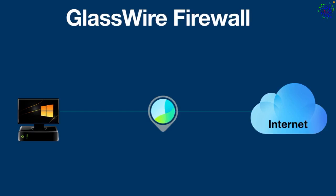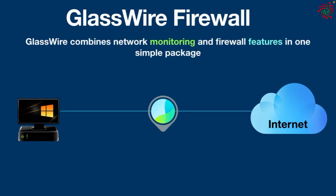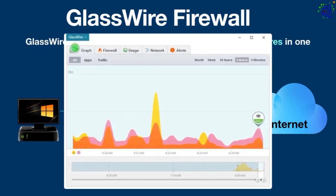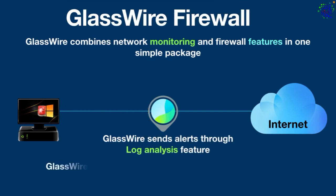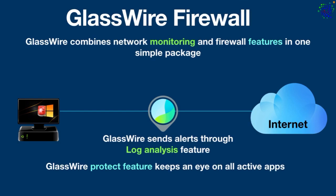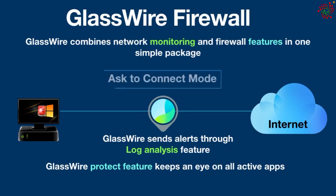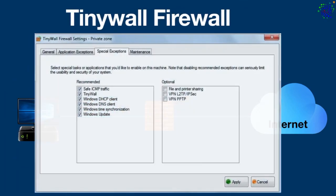Number three: GlassWire. GlassWire is one of the most attractive free firewalls available, combining network monitoring and firewall features in one simple package. Designed for both beginners and advanced users, it gives you a visual breakdown of network activity showing real-time data flows, bandwidth usage, and connection history, making it easy to spot unusual network behavior and potential security threats. GlassWire works with Windows Firewall to block suspicious apps and connections, sends alerts through its log analysis feature, and monitors all active apps. Its best feature is an 'Ask to Connect' mode to allow or deny new app connections.